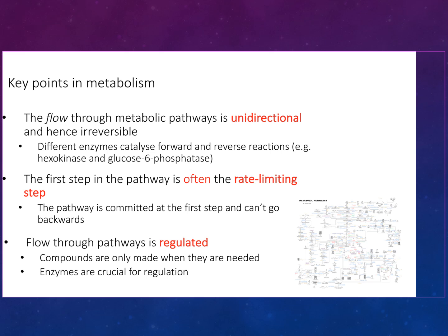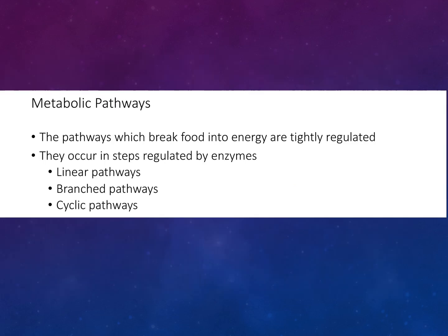Flow through pathways is regulated; compounds are only made when they are needed, and enzymes are crucial for regulation. Pathways that break food into energy are tightly regulated, involving steps regulated by enzymes, and can be linear pathways, branch pathways, or cyclic pathways.